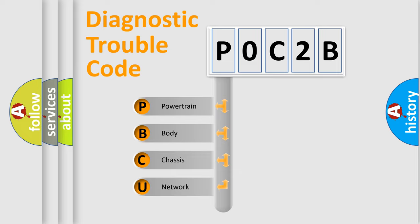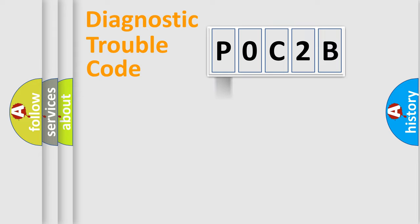We divide the electric system of automobile into four basic units: Powertrain, Body, Chassis, and Network. This distribution is defined in the first character code.